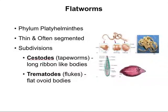Let's take a closer look at flatworms — the phylum Platyhelminthes. They're thin and often segmented. The tapeworm is the classic example of a segmented flatworm. The two subdivisions are the cestodes, which are tapeworms with long ribbon-like bodies — essentially evolved to be nothing more than reproductive segments. They have a head with a scolex for attaching themselves, and the rest of the body is simply reproductive packets. These segments can break off and release eggs into the environment to complete the life cycle. The other division is the trematodes, or flukes, which have flat or ovoid bodies.